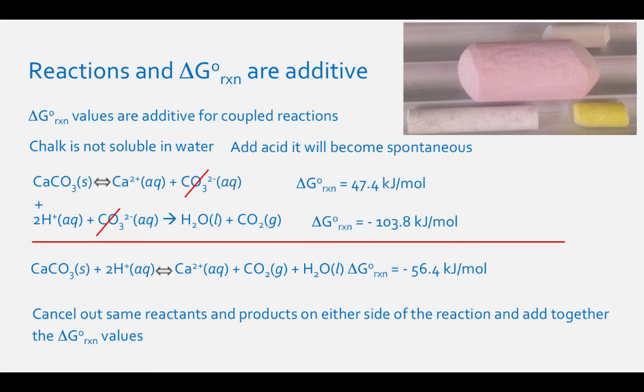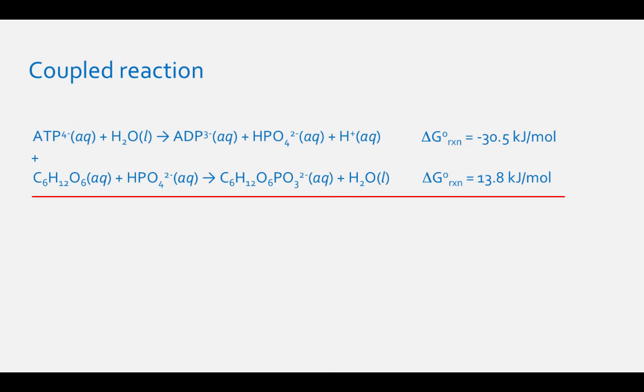This is true for any set of reactions, not just for those occurring in living systems. For the first two steps of glycolysis, ATP4- aqueous plus H2O liquid results in ADP3- aqueous plus HPO4 2- aqueous plus H+ aqueous. Standard delta-G of the reaction equals negative 30.5 kilojoules per mole.